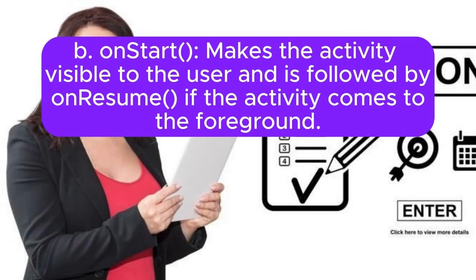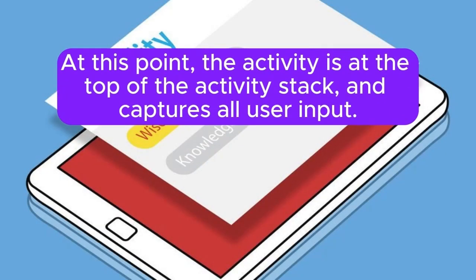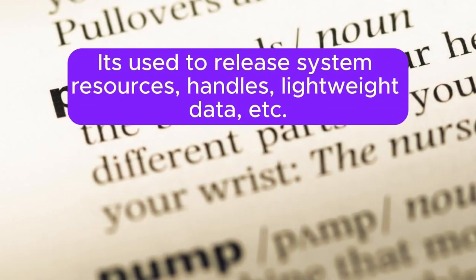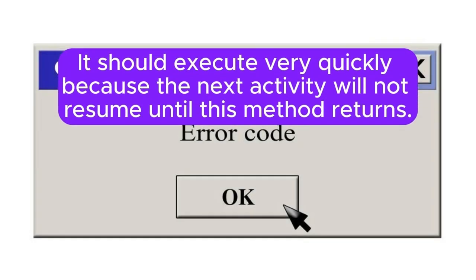OnStart makes the Activity visible to the user and is followed by OnResume if the Activity comes to the foreground. OnResume is called when the Activity starts interacting with the user; at this point the Activity is at the top of the Activity stack and captures all user input. OnPause runs when the system is about to start resuming another activity; it's used to release system resources, handles, and lightweight data, and should execute very quickly because the next Activity will not resume until this method returns.